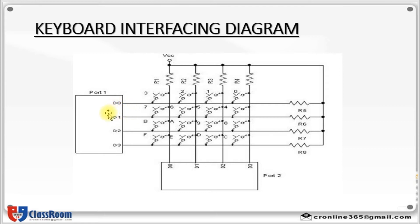The next stage is to detect in which row and column the key press occurred. By grounding row D1, it detects that the key press occurred in row D1, since key number 5 was pressed. Upon finding this row, it sets up the starting address from the lookup table holding the scan codes for that row, then moves to identify the key and retrieves the scan code from the lookup table.